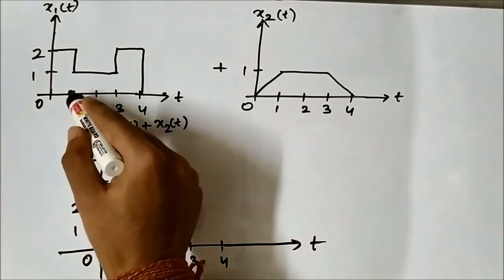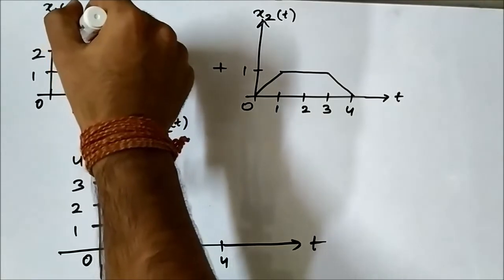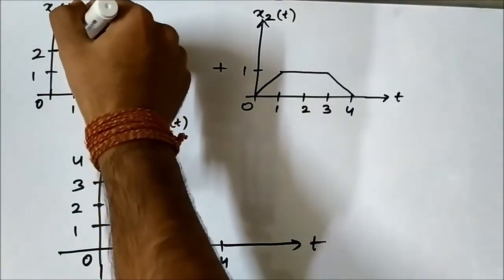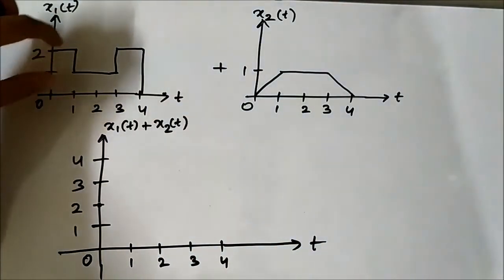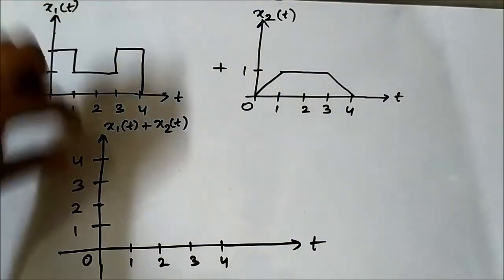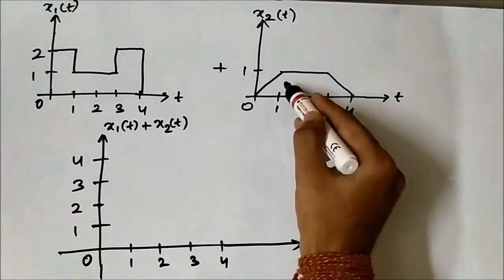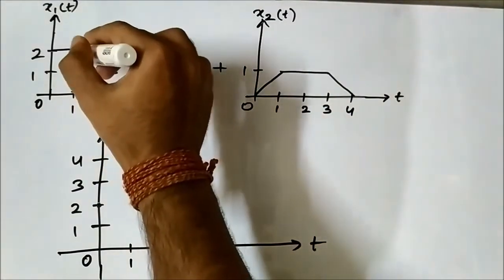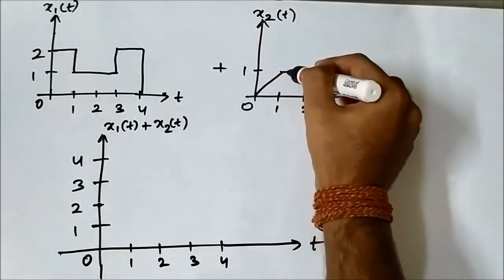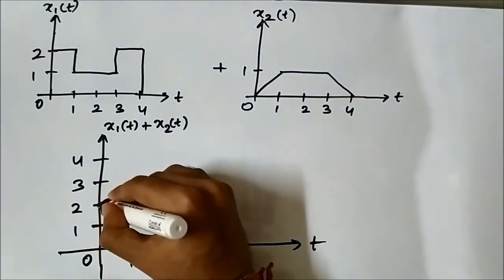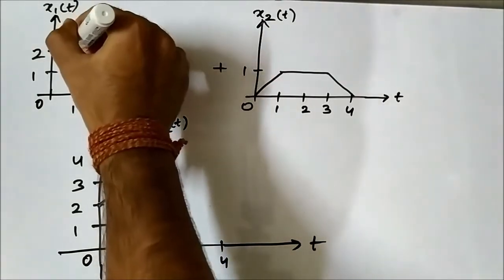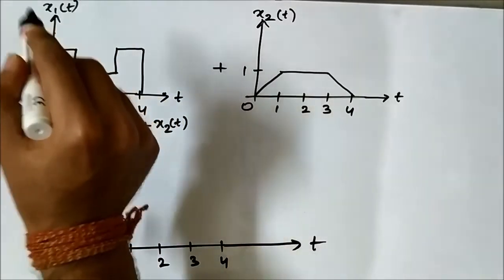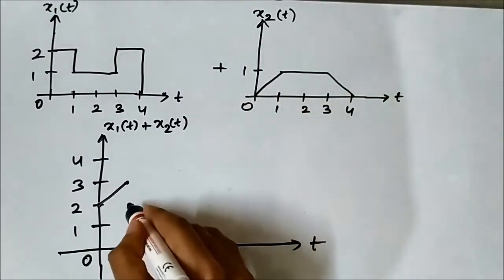At t equals 1, there is a transition in x1(t) — a drop from 2 to 1, a high-to-low transition. So at t equals 1 we have two values: the initial value 2 and the final value 1. For the initial value 2, the result is 2 plus 1 which is 3. Then for the final value 1, we add 1 and get 2, so there will be a drop here.